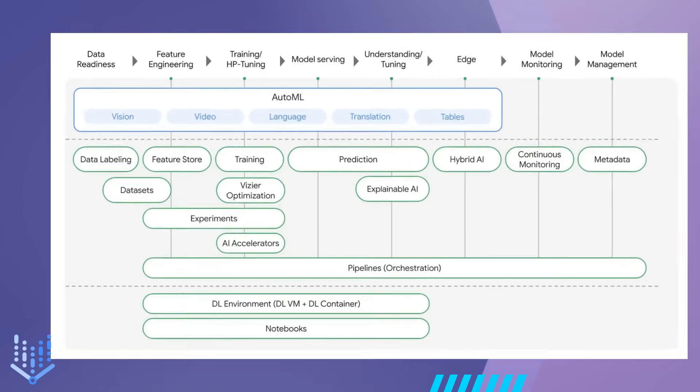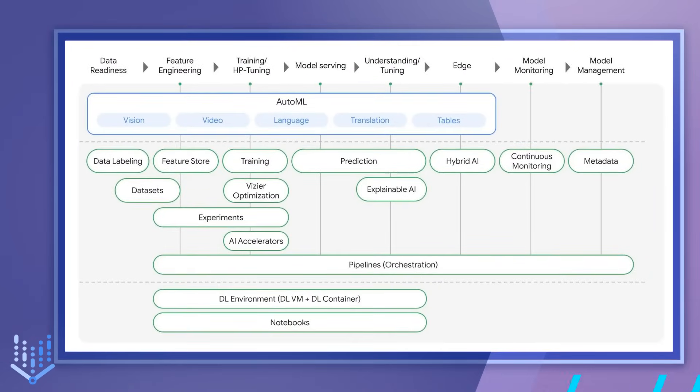But what is Vertex AI? Vertex AI is a fully managed machine learning platform that helps you to build, train, and deploy models at scale. It offers a range of tools and services to make the process of building and deploying models faster and more efficient. With Vertex AI, you can use pre-built models or build custom models from scratch using popular frameworks like TensorFlow, PyTorch, and scikit-learn. Vertex AI also offers AutoML capabilities, allowing you to automatically generate machine learning models without requiring deep expertise in machine learning.